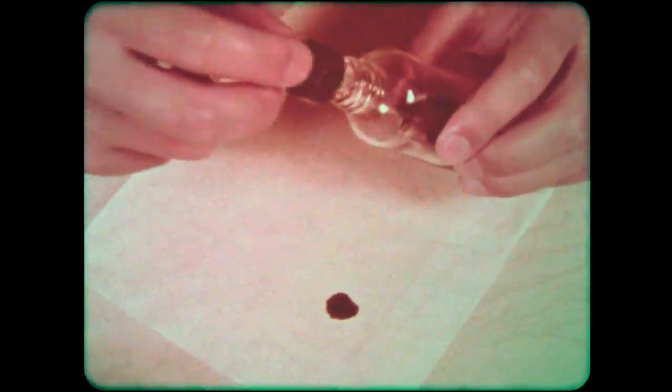After the napkin has been spotted and the ink has been allowed to dry, it is carefully draped so as to draw up the solvent by capillary action. Soon the solvent moves through the substance.